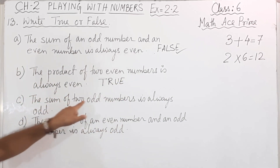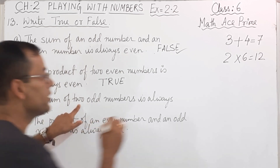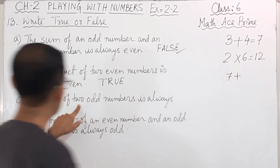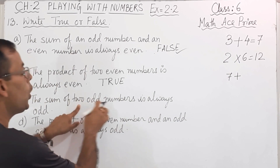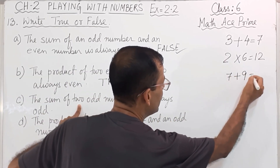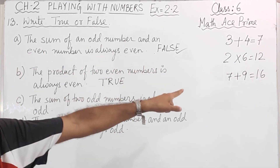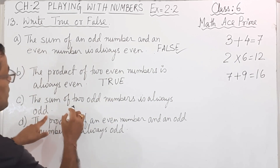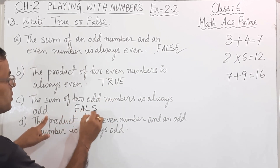Third statement: the sum of 2 odd numbers is always odd. If you take 7 and another odd number, say 9, then 7 plus 9 equals 16. And 16 is an even number, but the statement says it is always odd. So this answer is false.